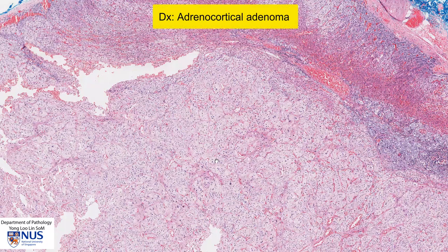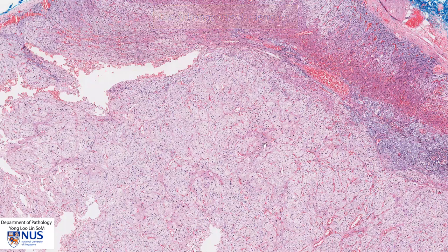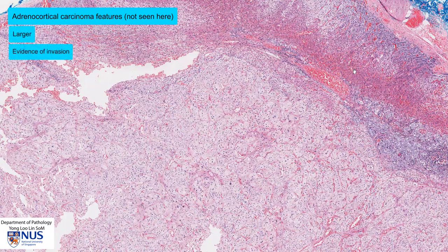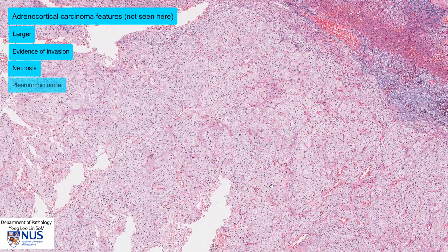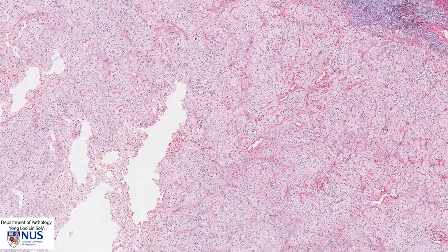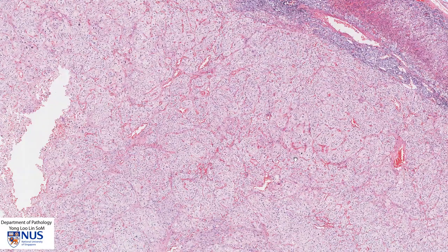There is a malignant counterpart known as an adrenocortical carcinoma. How do we differentiate adenoma from carcinoma? Usually, carcinomas are much larger. They have invasive growth, invading into the adrenal gland, into the adjacent structures, into blood vessels and sinusoids. They also have areas of necrosis. The cells appear more pleomorphic, with more atypical nuclei, and there are raised mitotic counts. This particular tumour appears relatively bland and uniform, which is quite a classical appearance of an adrenocortical adenoma.